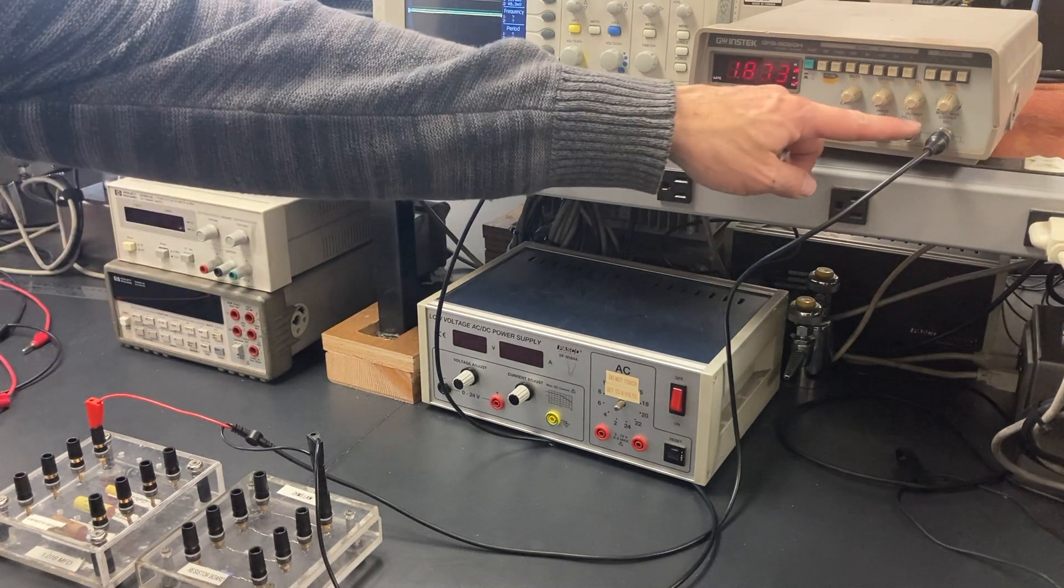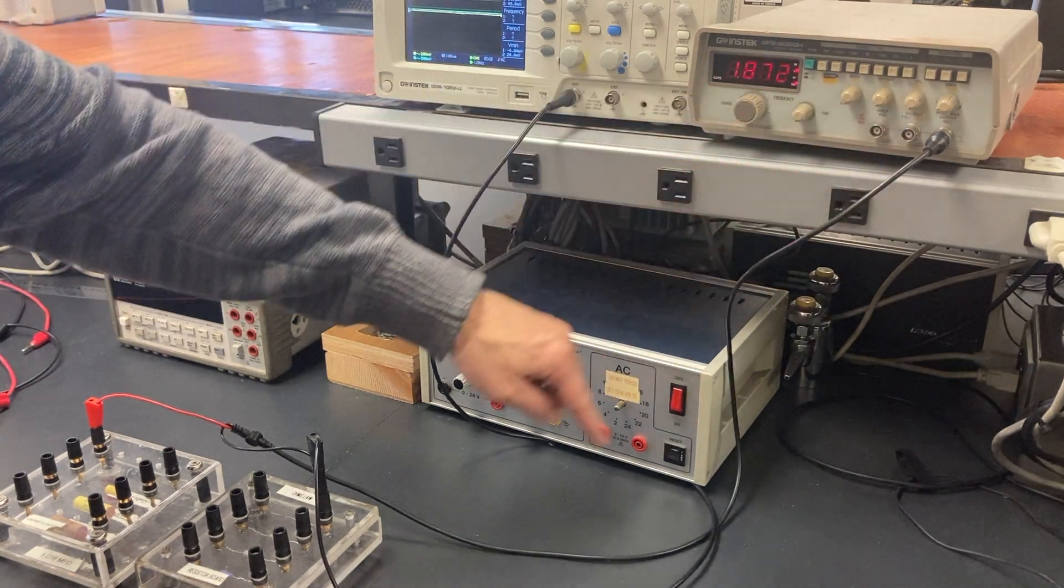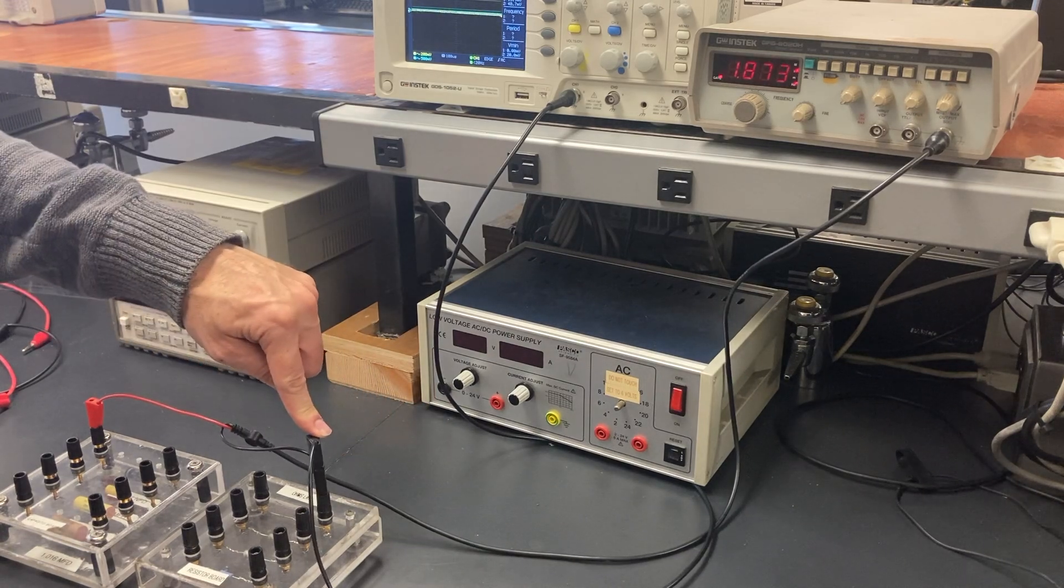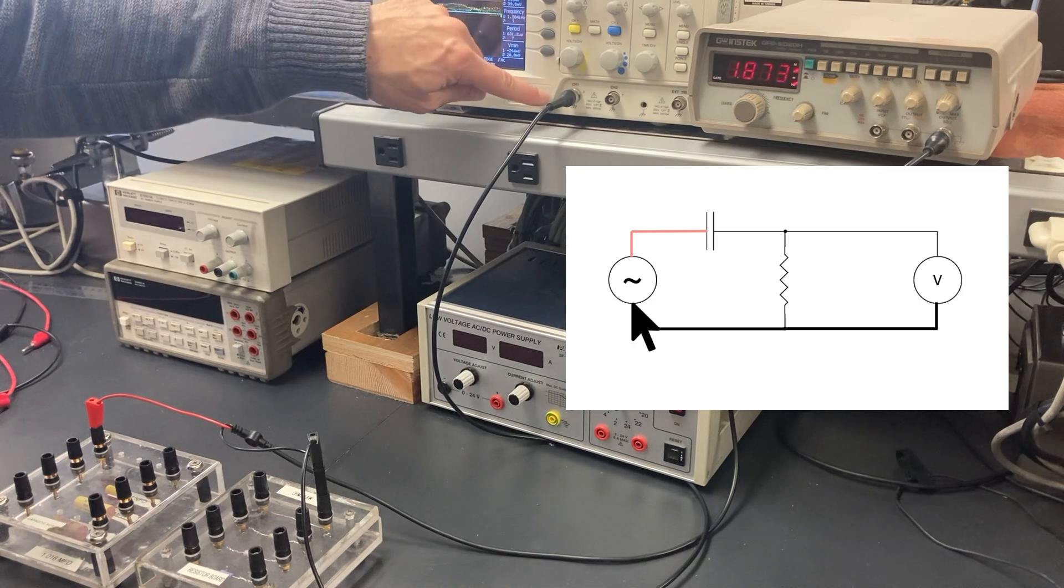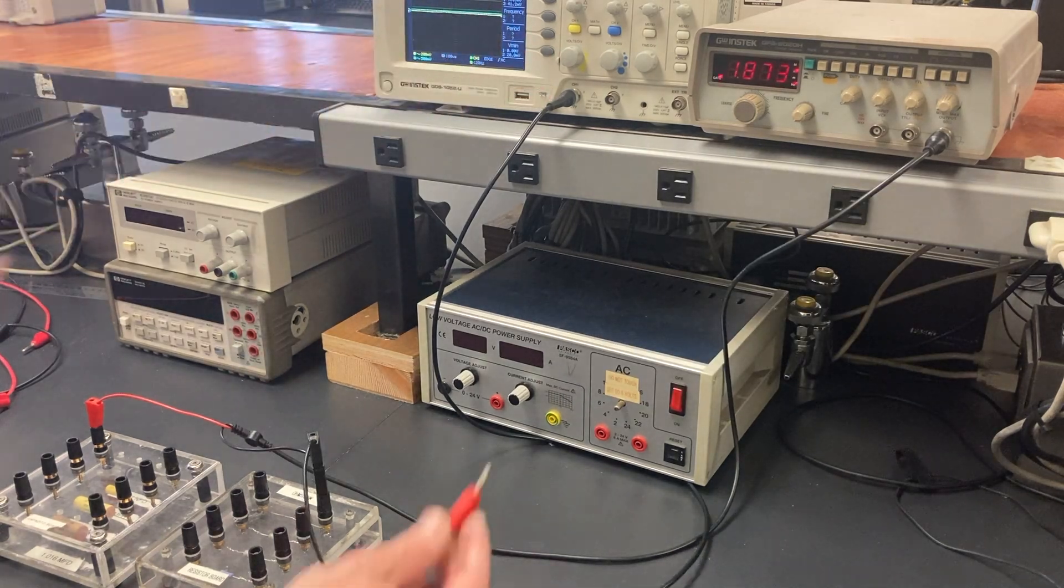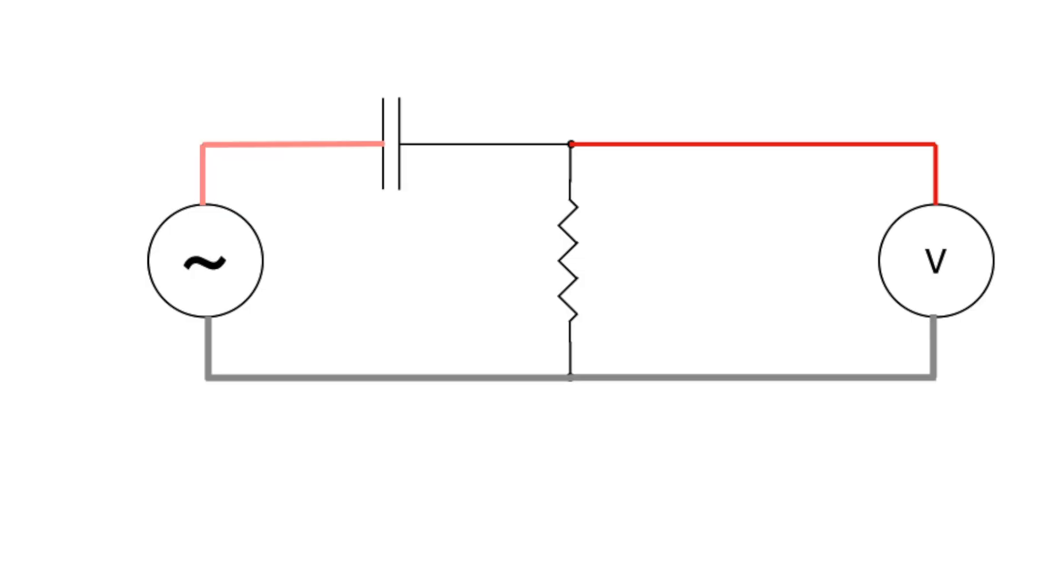I've got my output from the function generator going to the resistor and then continuing on to the oscilloscope, and now we've got this free red connector that comes from the oscilloscope. So we just want to consult our circuit diagram, and we see that it's supposed to connect to the other side of the resistor.